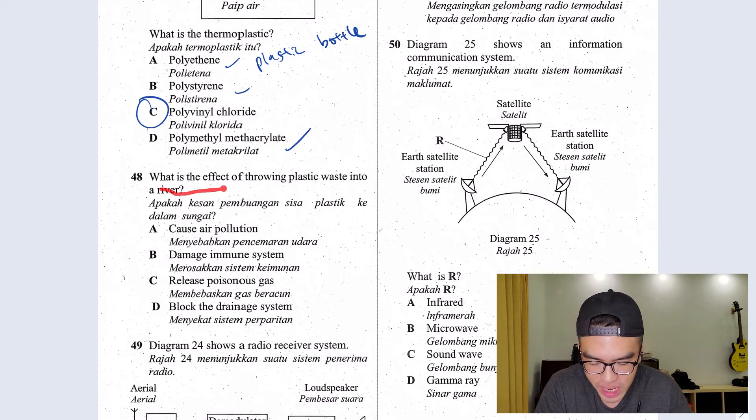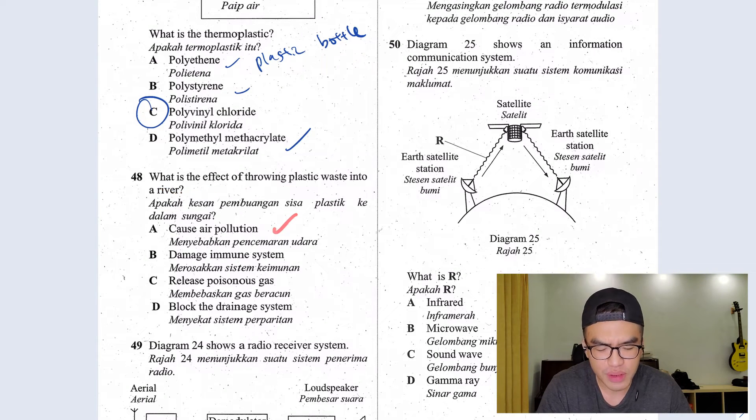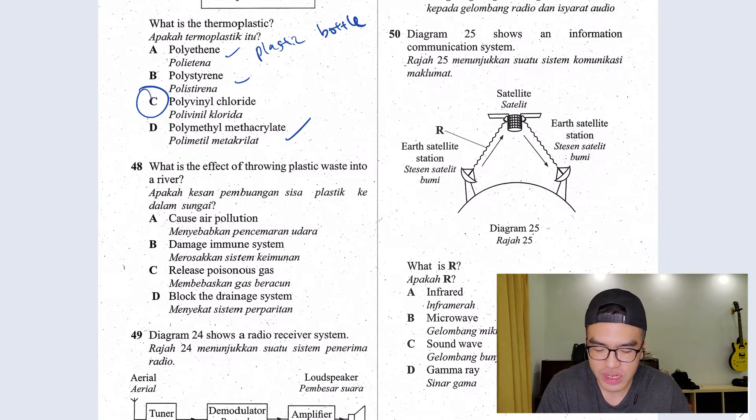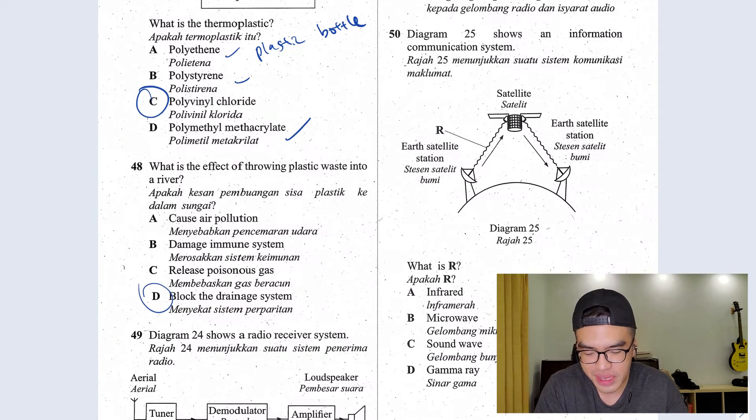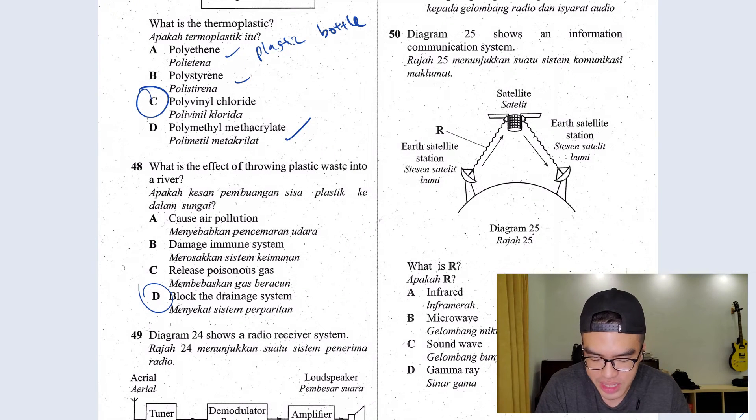Question 48. What is the effect of throwing plastic waste into a river? Does it cause air pollution? No, you're not burning it. Damaged immune system. You're not eating it. Release poisonous gas. This is related to A, so of course this is wrong. Block the drainage system. Yes, this is the most direct answer.